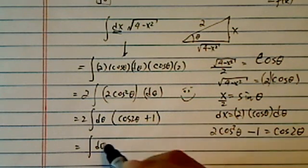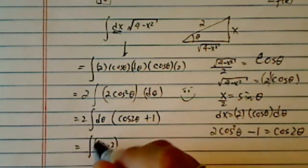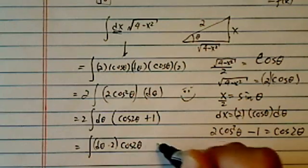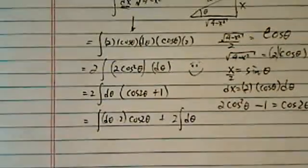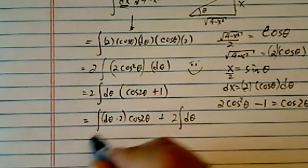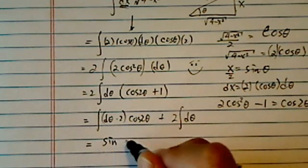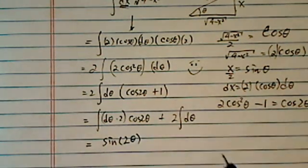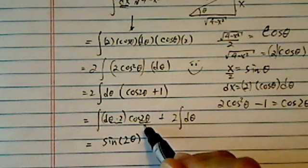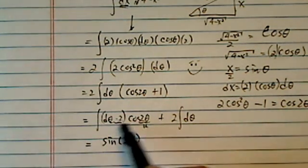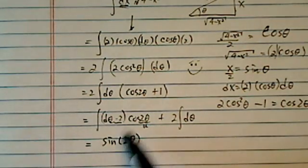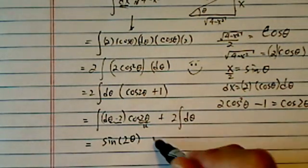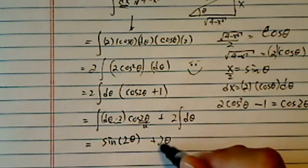I'm going to do d theta times 2, cosine of 2 theta plus twice d theta. The reason I put a 2 theta in there, because I know I can do this one as 1 unit. You can pretty much substitute this one as a variable u if you want, and then cosine of u, du, becomes sine of u, and then you put 2 theta back in there. And this one becomes twice theta.